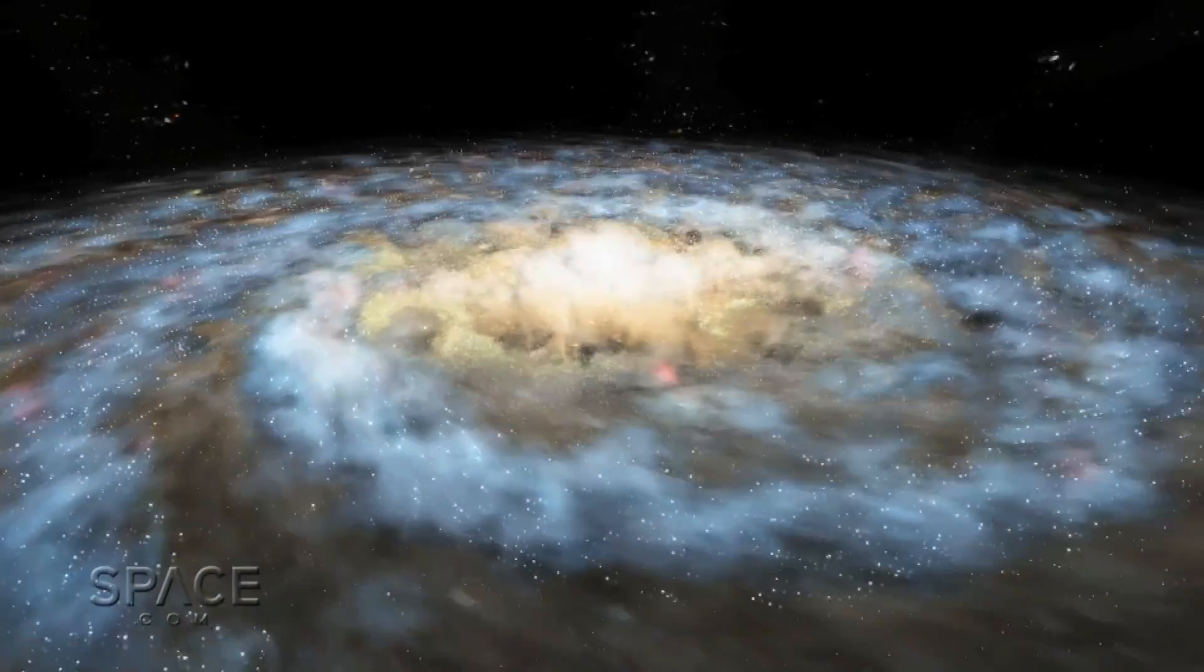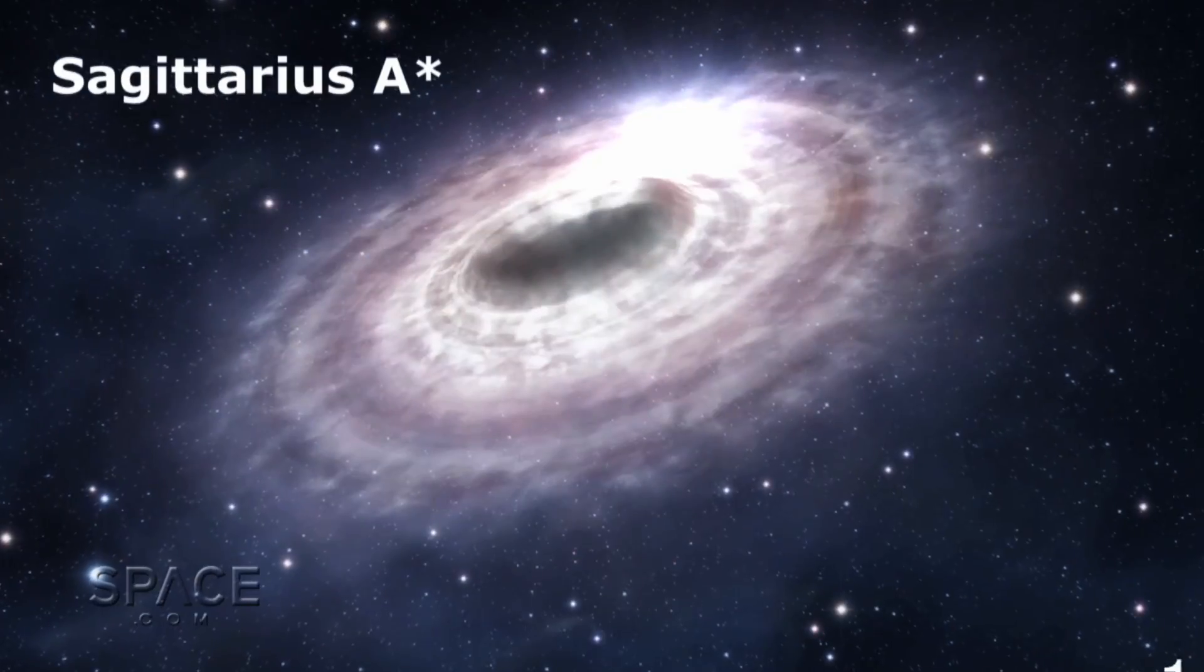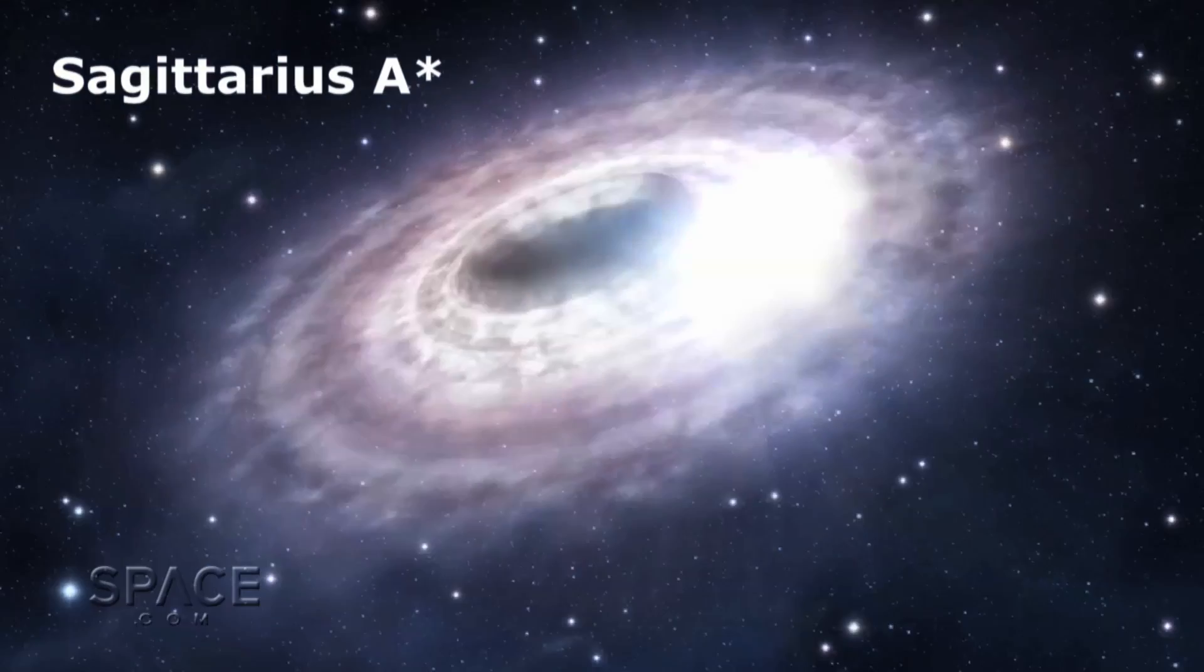The black hole at the galactic core, known as Sagittarius A-star, is about 4 million times more massive than our sun.